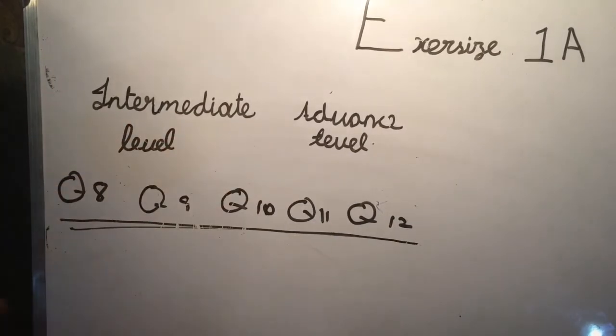Now guys, first we will do question number 8. The question is: an area of square photo frame is 250 centimeter square. Find the perimeter of the photo frame, leaving your answer correct to one decimal place.